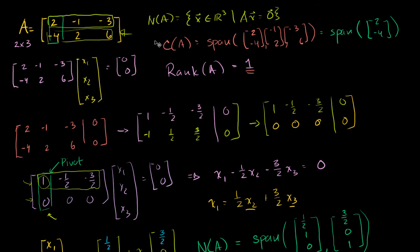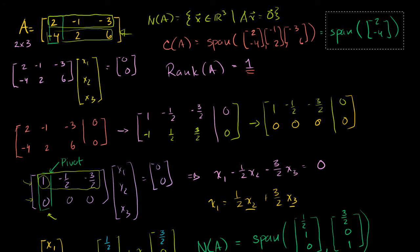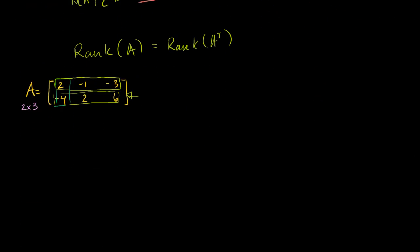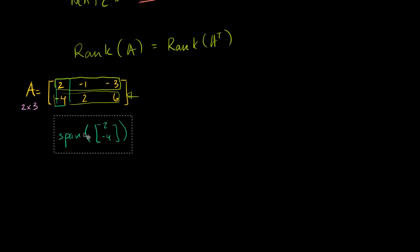Our column space of A was the span of the R2 vector (2, -4). This is the column space of A, equal to that.